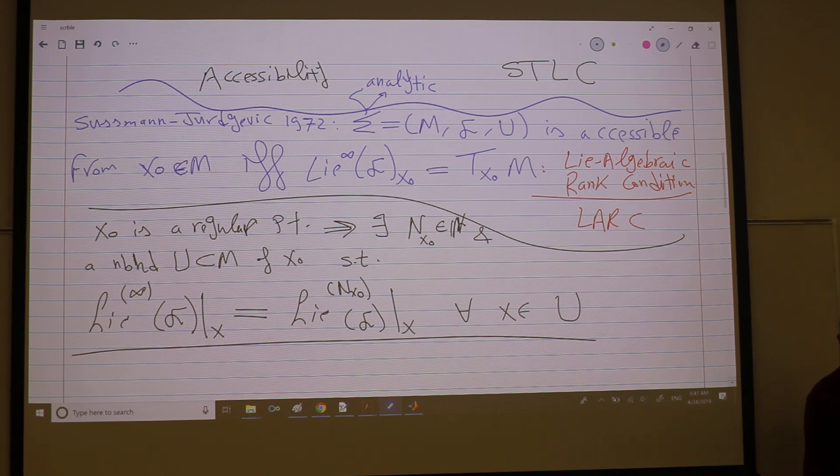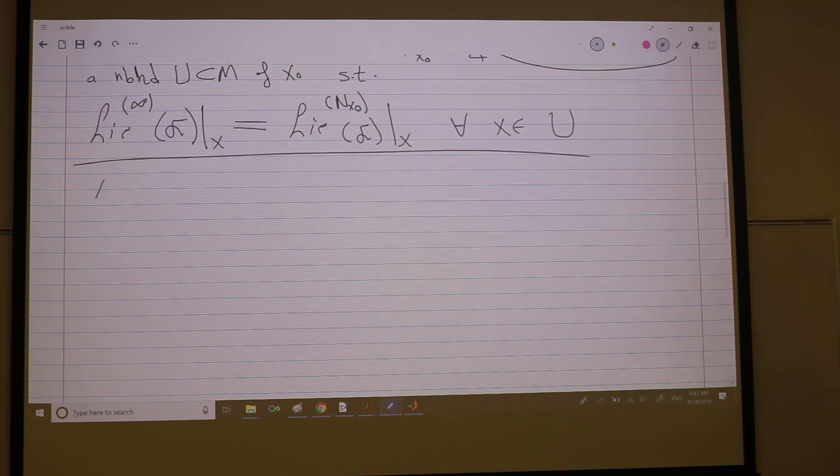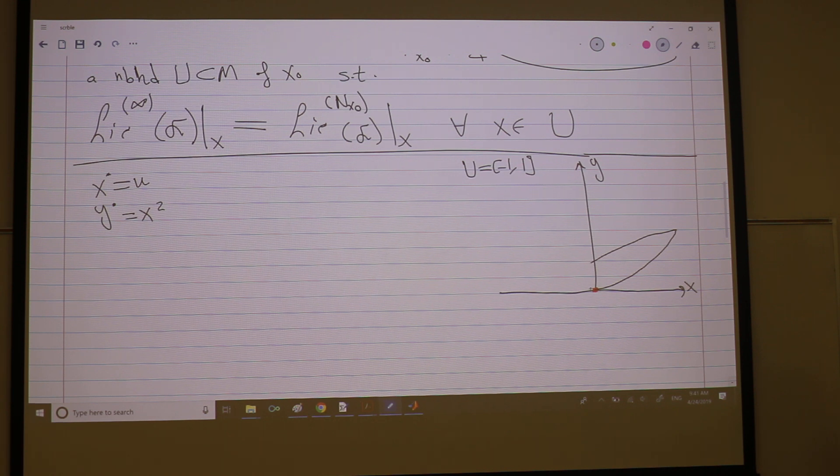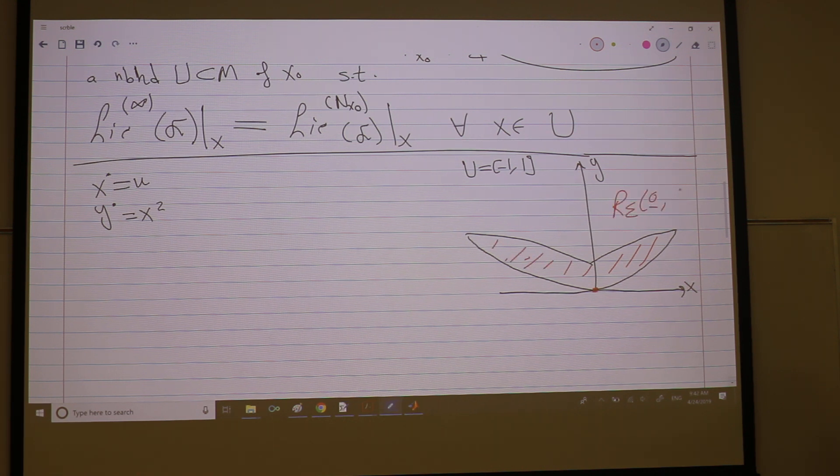So let's apply this theorem to conclude accessibility. So we have our system x dot equals u, y dot equals x squared, the system that we considered last time. So this is my x, y, and this is considered an interesting case where u was bounded. This is the origin, this was the reachable set. This was the reachable set from the origin in at most time t.